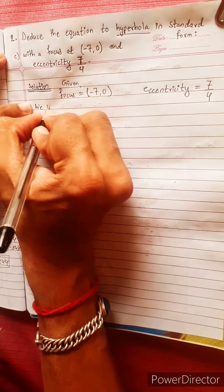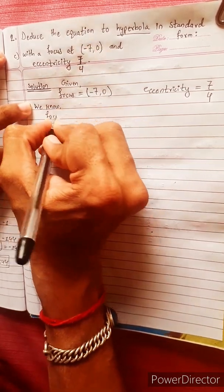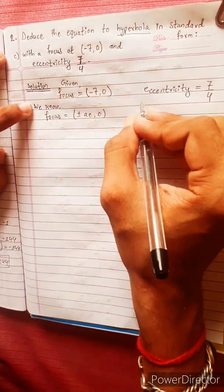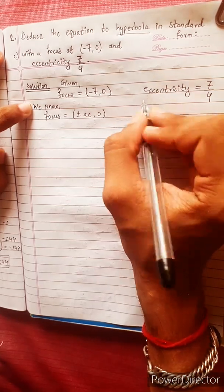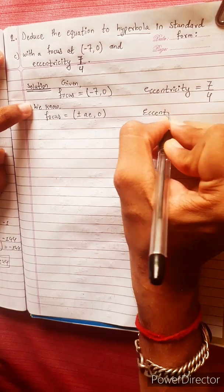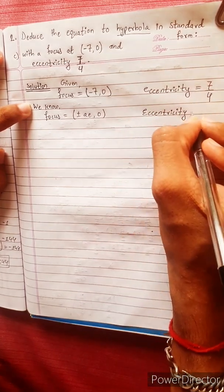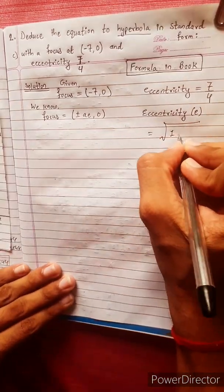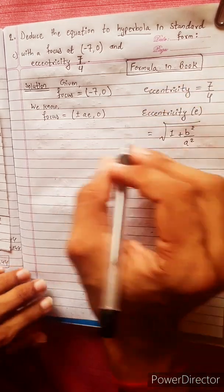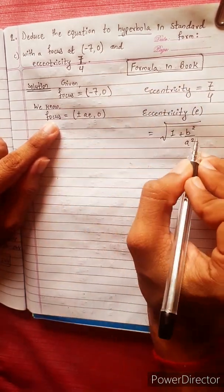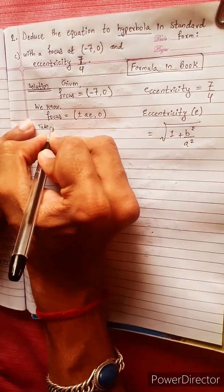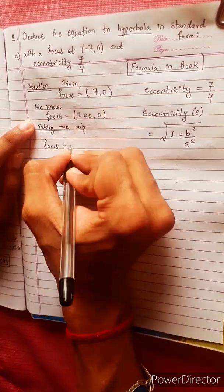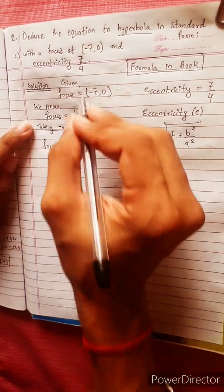We know we have the formula: focus equals plus minus ae, 0. Eccentricity is equal to the square root of 1 plus b squared by a squared. Taking the negative value only, focus equals minus ae, 0.